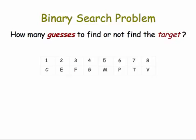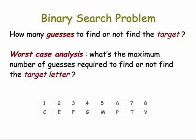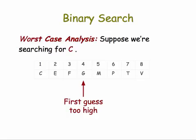And let's work through a simple example. Here's a list of eight letters in order. We're going to perform what's called the worst case analysis. That is, what's the maximum number of guesses required to find or not find the target letter? What's the worst case? So suppose we're searching for the letter C, which is at index 1.